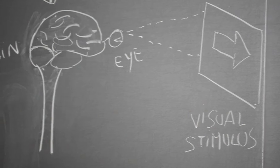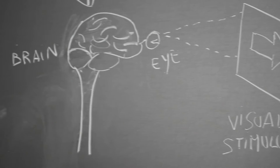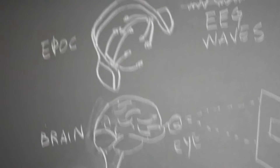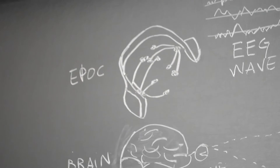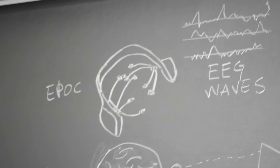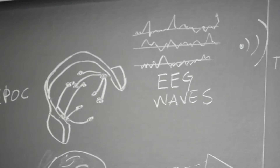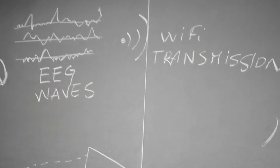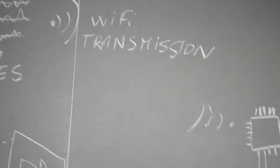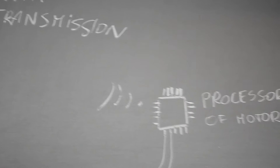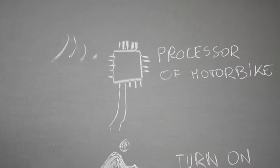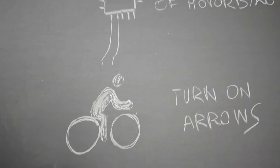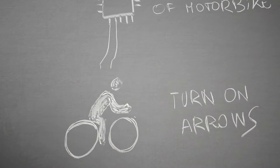RIDE is a built-in EEG acquisition device placed in the helmet. The recorded EEG trace is sent via wireless connection to the internal processor of the motorbike, which elaborates and construes a proper command for the motorcycle electronics. RIDE has been designed to help riders by automatically inserting the turn signal at the exact moment the rider intends to turn during their everyday journey.